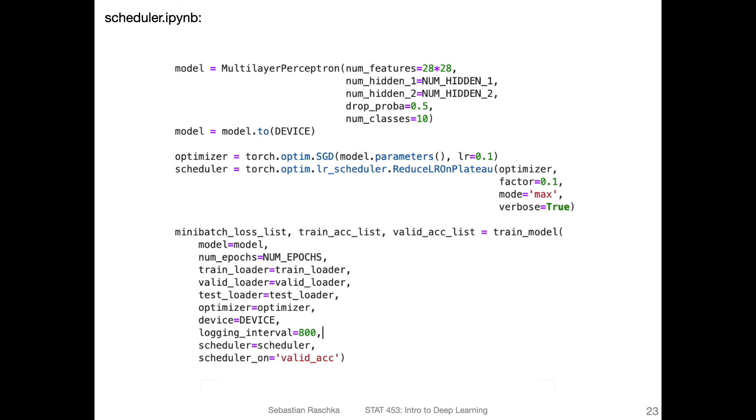But let me show you how this works in practice in PyTorch. So I prepared a code example. I put it here as scheduler.ipynb, a Jupyter notebook. And I will share that on the repository, like always, so I will include a link under the video. So what I'm doing here is I'm initializing the multi-layer perceptron from last week, where we used batch norm and dropout. And I'm now using SGD with a learning rate of 0.1.